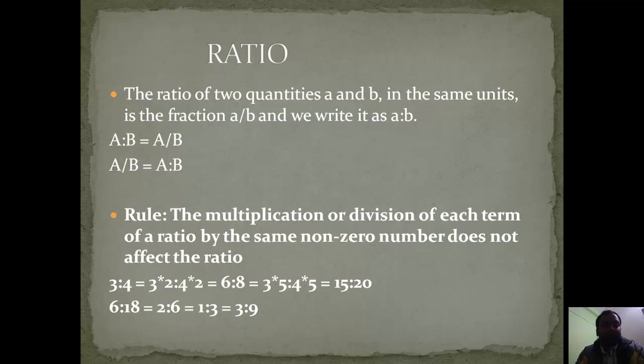Ratios — we generally write it as 'a is to b'. This means a is to b is equal to a upon b, or if it's a upon b we can write it as a is to b.